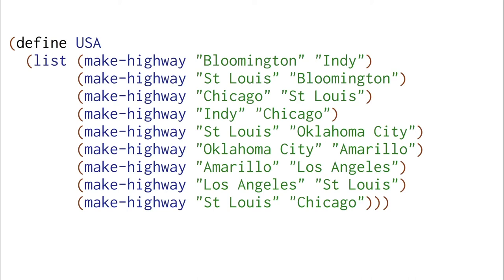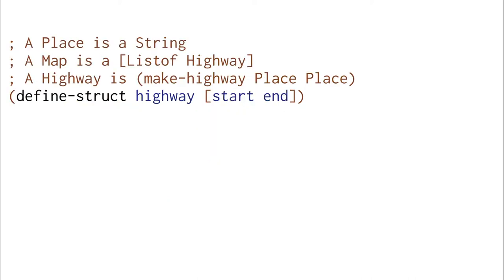What data definition does this represent? It's a map. A map here is a list of highways, and a highway contains two places: a start and an end. Places are just strings like Bloomington, Los Angeles, or St. Louis.